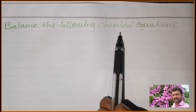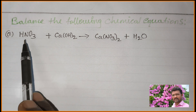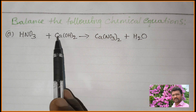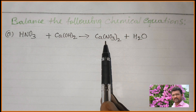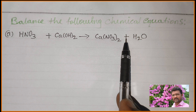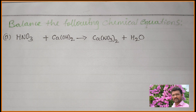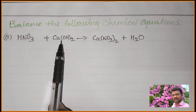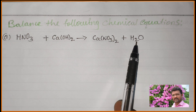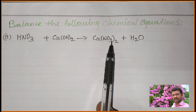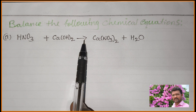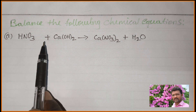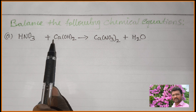Balance the following chemical equation. First question: HNO3, nitric acid, plus calcium hydroxide. When nitric acid reacts with calcium hydroxide, it gives calcium nitrate plus water. The reactants are on the LHS and the products are after the arrow on the RHS. This arrowhead indicates that the product is formed.